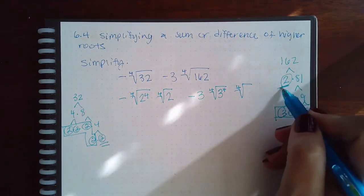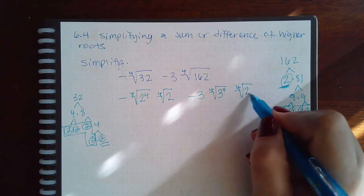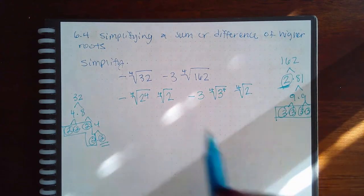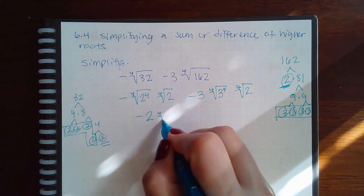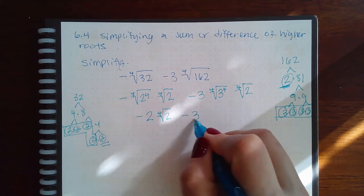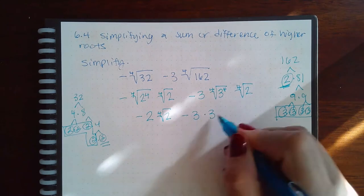So then the four and the four will cancel, giving me two. This one will stay the same. Here we have three. Four and the four will cancel, giving me three, and then the fourth root of two.